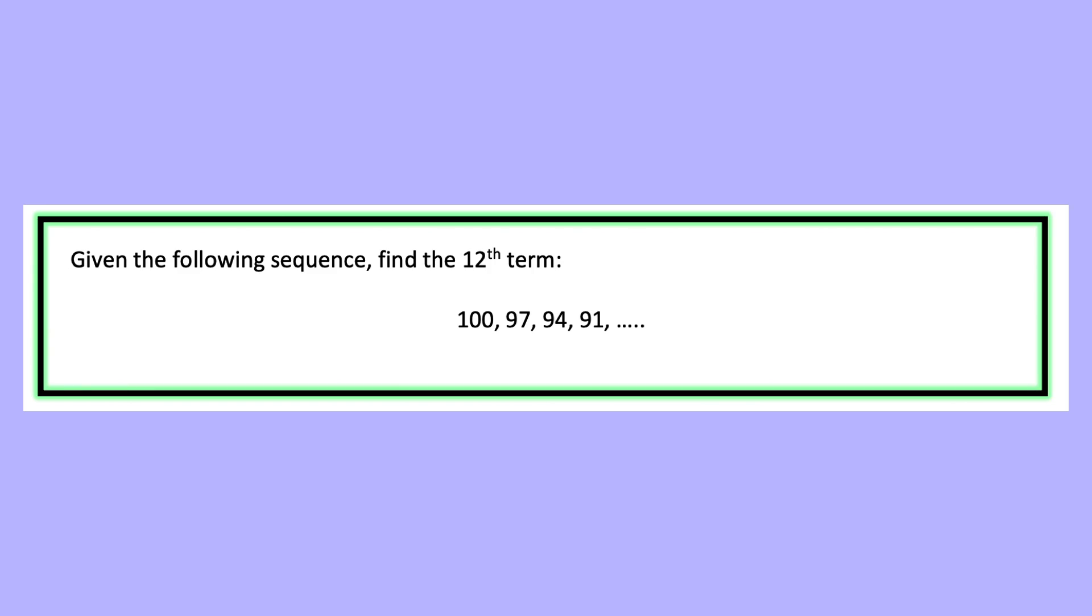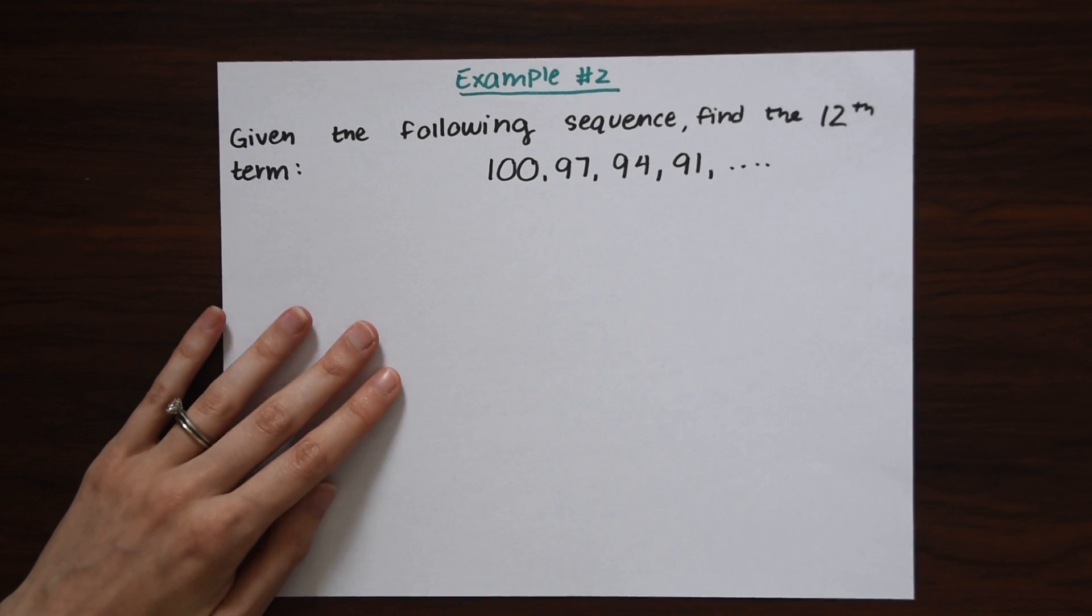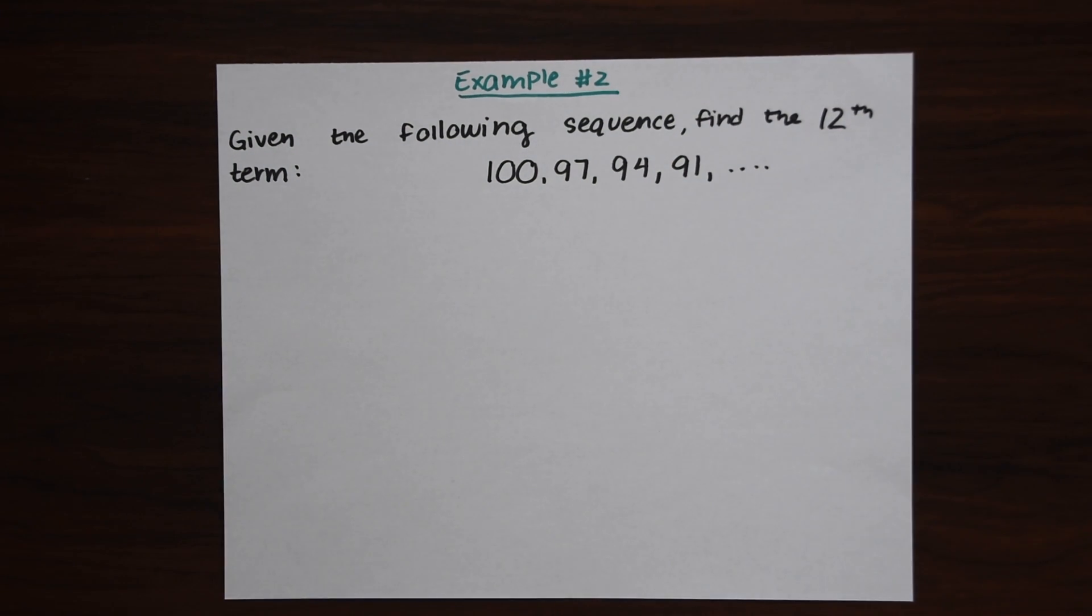So let's try another one. Another quick example that's pretty similar. So given the following sequence, find the 12th term of 100, 97, 94, 91.